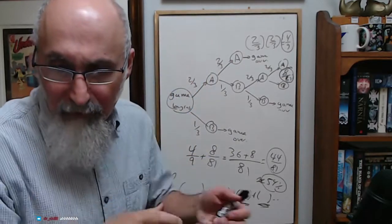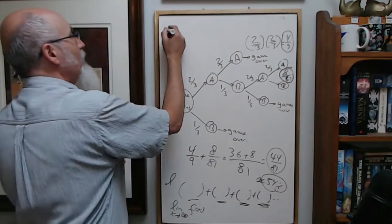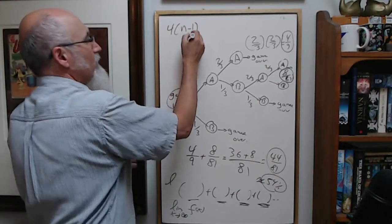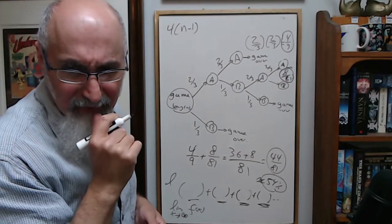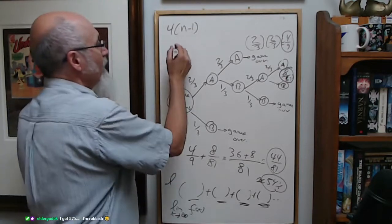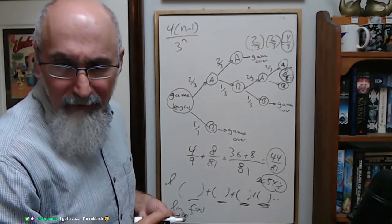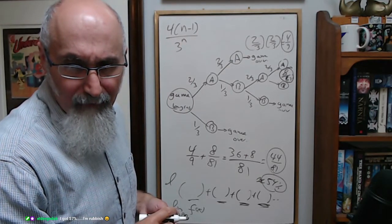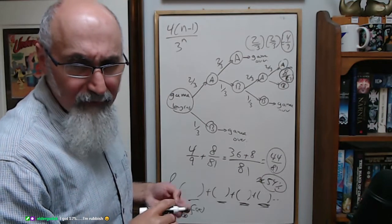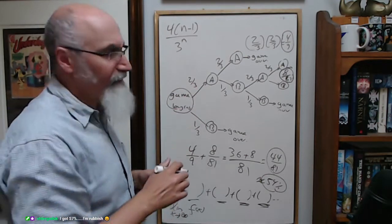So the formula that Dr. Hangman mentions is this: he's saying the formula goes like this: 4(n minus 1)—I'm assuming the start is—3 to the power of n. Or is that supposed to be 4 to the power of? It could be that for n.